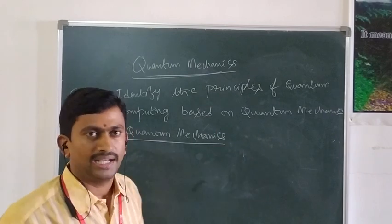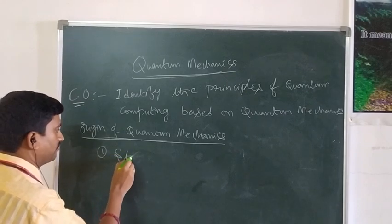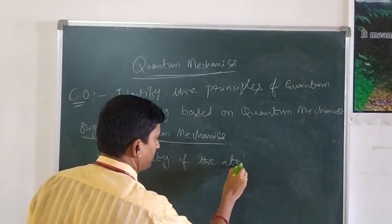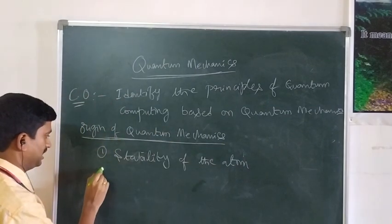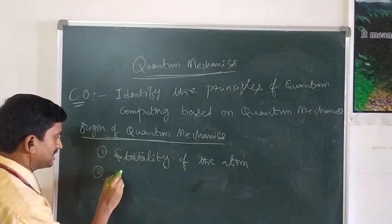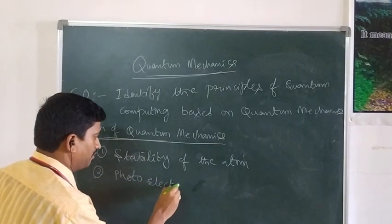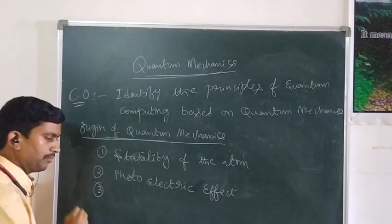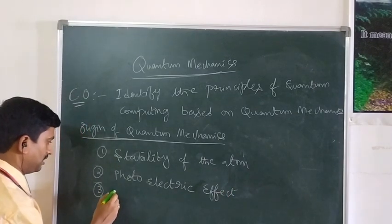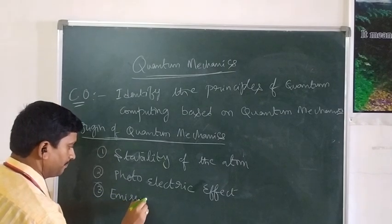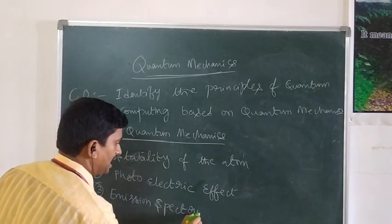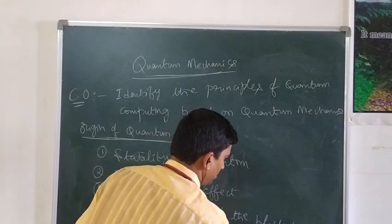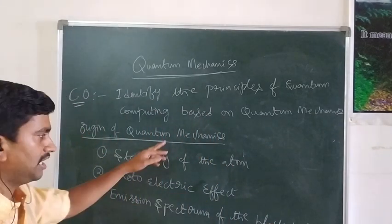But this particular classical Electromagnetic Theory failed to explain the stability of the atom. This is the first failure of the classical Electromagnetic Theory, or classical Mechanics. The second failure is that classical Mechanics is unable to explain the experimentally observed fact that is nothing but the photoelectric effect. And one more important failure of classical Mechanics is the emission spectrum of black body radiation — classical Mechanics is unable to explain the emission spectrum of the black body. So these three are the failures of classical Mechanics.